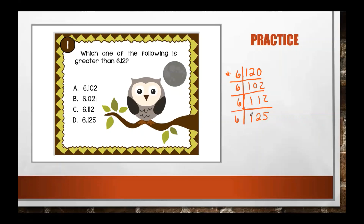In the hundredths place I have two and zero. Zero is not larger, so I'll cross out that option. I can cross out option B as well because zero is less than one in that place.